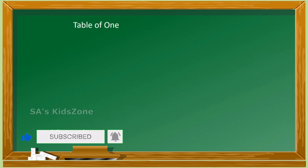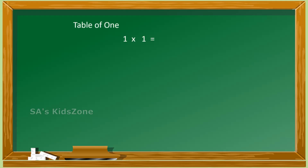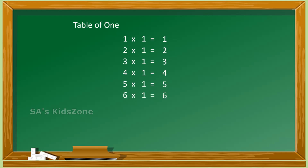1 one is 1, 2 ones are 2, 3 ones are 3, 4 ones are 4, 5 ones are 5, 6 ones are 6, 7 ones are 7.